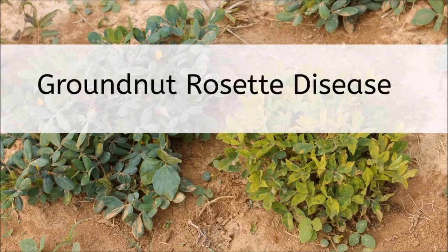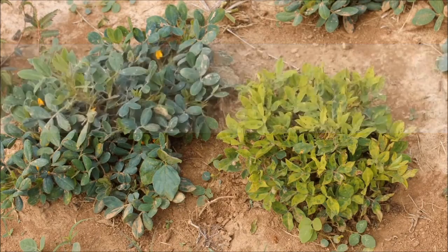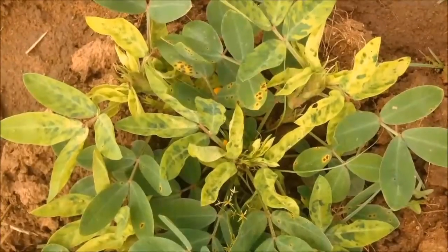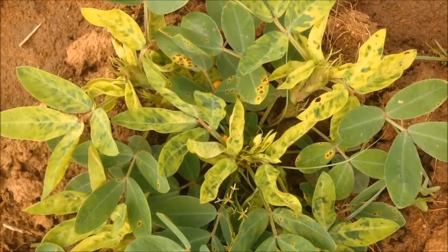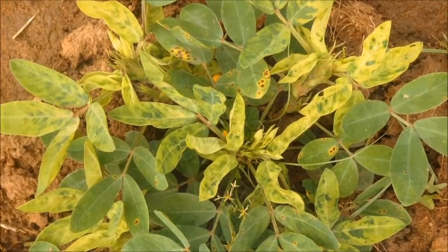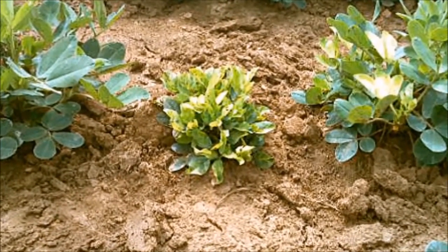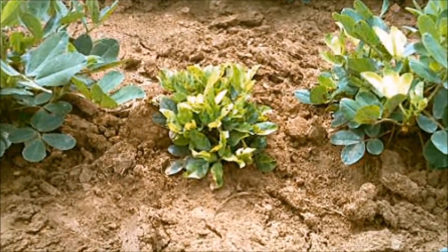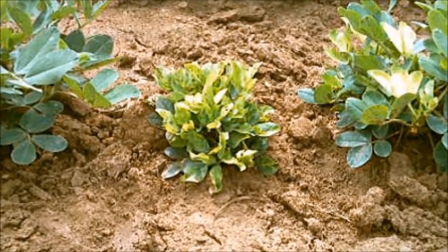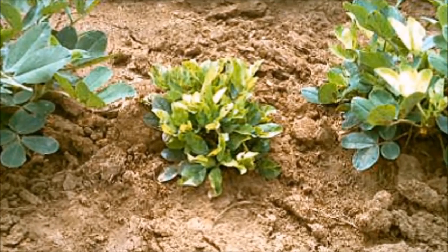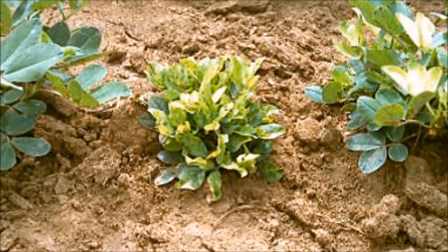Groundnut rosette disease is caused by a virus. When groundnut plants are affected by rosette disease, the leaves turn yellow with small patches of green and the plants can be stunted and bushy. Severely stunted plants, which are the result of early infection, may give no yield at all.